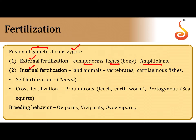Internal fertilization is mostly an adaptation seen in land animals because the outside environment is dry, so fertilization cannot happen outside the body. In the case of vertebrates, cartilaginous fishes also exhibit internal fertilization, and some bony fishes may also exhibit it. When we mention vertebrates, we are mostly talking about reptiles, birds, and mammals.